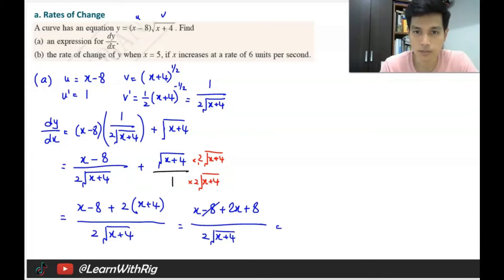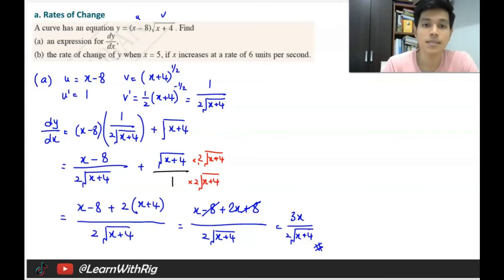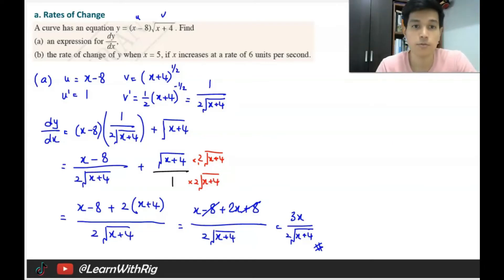Simplifying the numerator: x − 8 + 2x + 8 gives 3x. So dy/dx equals 3x over 2√(x + 4). This is a more simplified answer. This was based on the previous video. Now we'll solve question (b).